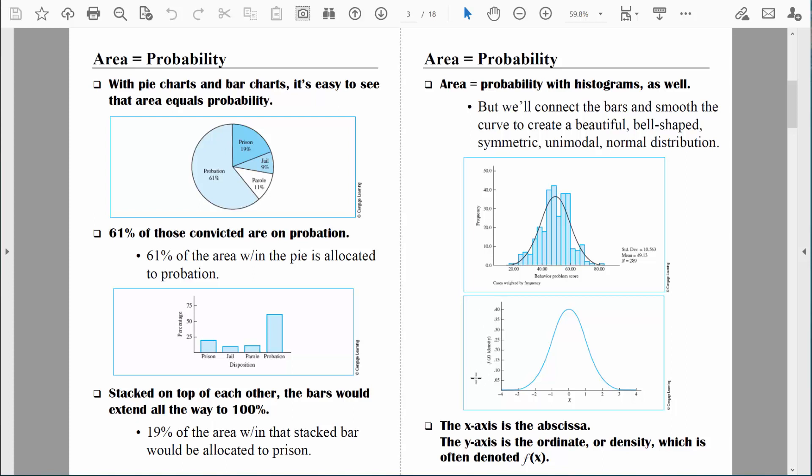Keep in mind there's a y-axis as well that represents the frequencies or the relative frequencies. That y-axis is sometimes known as the ordinate or density. We'll just call it the y-axis. Sometimes it's labeled f of x. And all that means is the density of the distribution is a function of the individual scores.